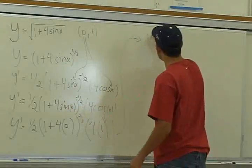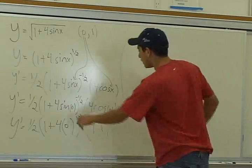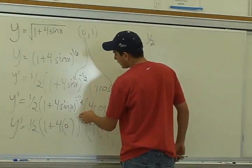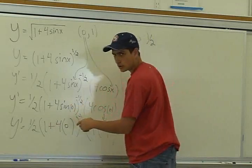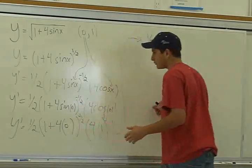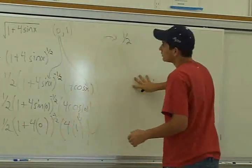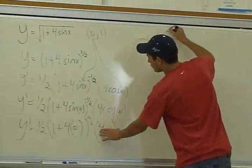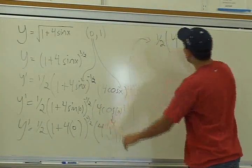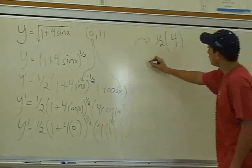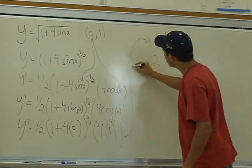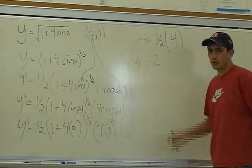So it's just 1/2 times—this is 4 times 0, 0 plus 1, that's 1. 1 to the negative 1/2 is just 1 over the root of 1, which just equals 1. So this equals 1/2, and then this is just 4, so 1/2 times 4. And this just simply equals 2. And this is the slope at that point.